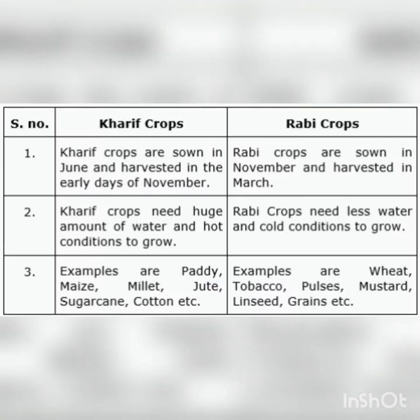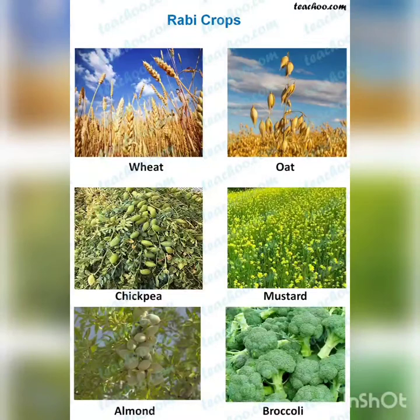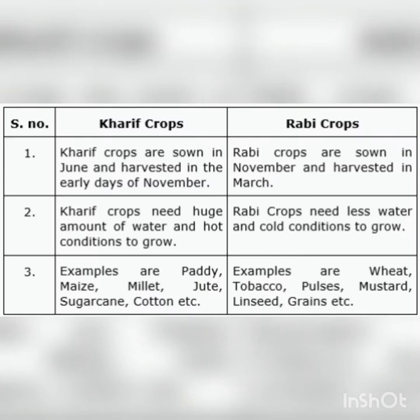Some crops require less water and are grown only in winter season, from October to March or April. These are generally called Rabi crops. In Arabic language, Rabi means winter. Crops like wheat, maize, coriander, fenugreek, and barley are grown in winter season and are called Rabi crops. Kharif crops are grown during June to October, and Rabi crops are grown during October to March or April.